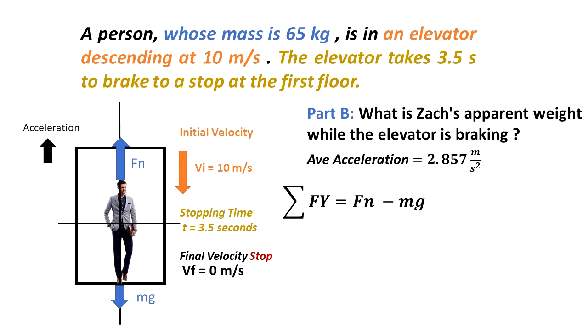We know that the summation of the forces in the y direction is Fn going upwards minus mg going downwards. But for this case, there is an unbalanced force that's changing the velocity, so the summation of the forces in the y direction is equal to mass times acceleration. I draw the acceleration and the velocity arrows out of the free body diagram because the free body diagram is only for forces.